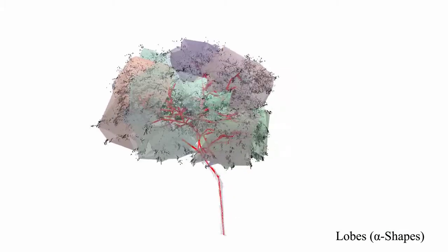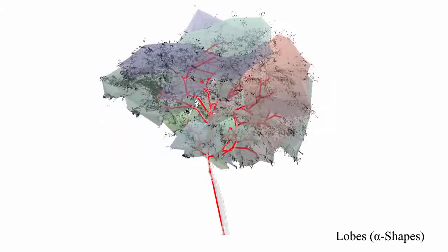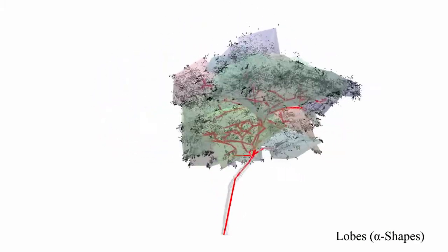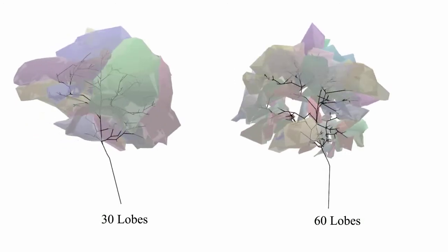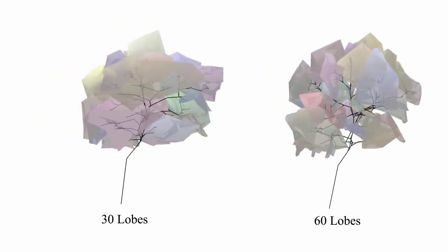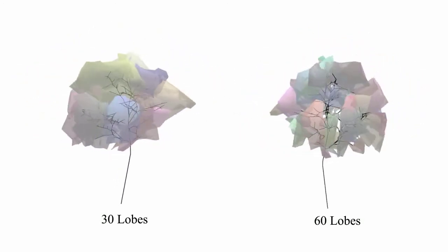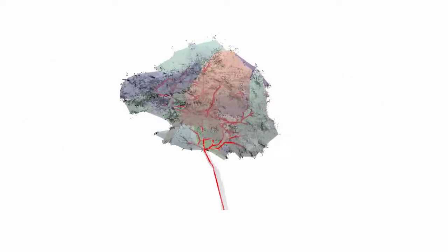The lobes are created using the alpha shape approach. The number of lobes can be controlled by the branch diameter, from which on lobes are constructed. This allows us also to control the size of the lobe-based representation.